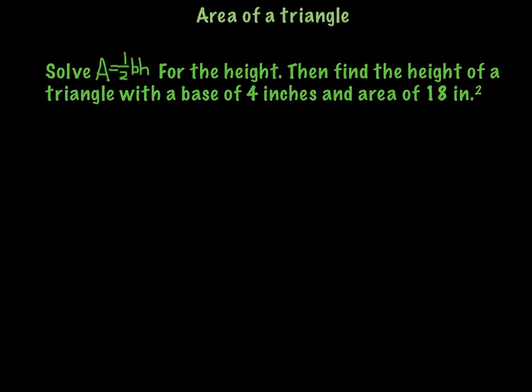For our first example, we're going to use the formula for the area of a triangle. We're going to solve A equals one-half bh for the height. Then we're going to find the height of a triangle with a base of 4 inches and an area of 18 square inches. So what you're going to do is you're going to take this literal equation that has three different variables in it.